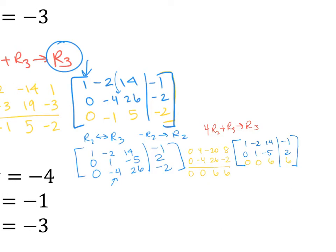The last step for Gauss-Jordan would be to turn the 6 into a 1 by multiplying row 3 by 1/6. I'll stop here at row echelon form and use back substitution instead.